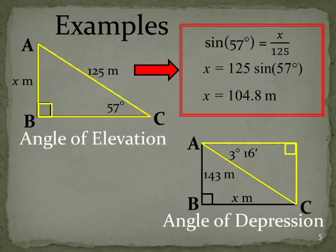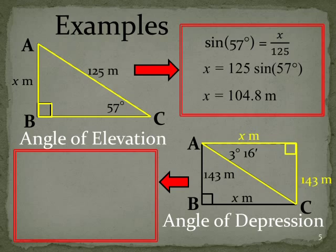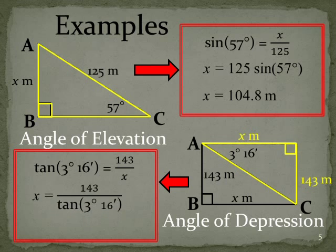This is our right angle triangle we work with. We put our distances on them, so put the x and the 143, transfer them across. For the angle we're looking at, the 143 is the opposite, the x is the adjacent, so we're going to use tan. Tan of 3 degrees 16 minutes is 143 over x. Using our right angle trigonometry, we swap over the x and the tan 3 degrees 16 minutes, so we get x is 143 divided by tan 3 degrees 16 minutes. We find that x is 2,505 meters away, in other words about 2.5 k's away.